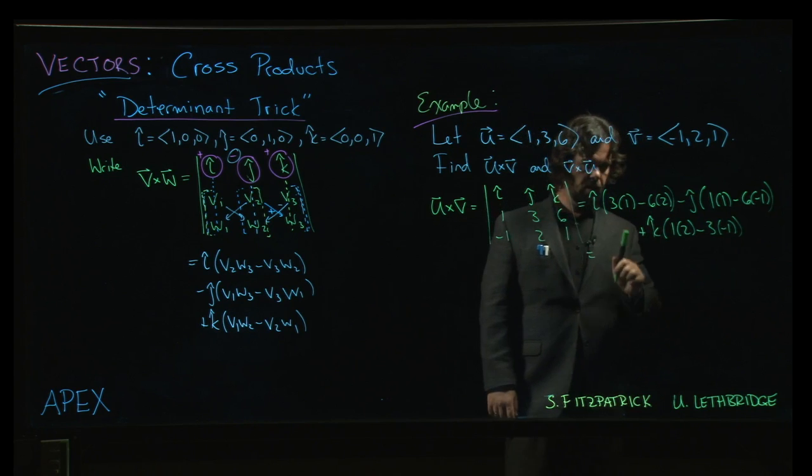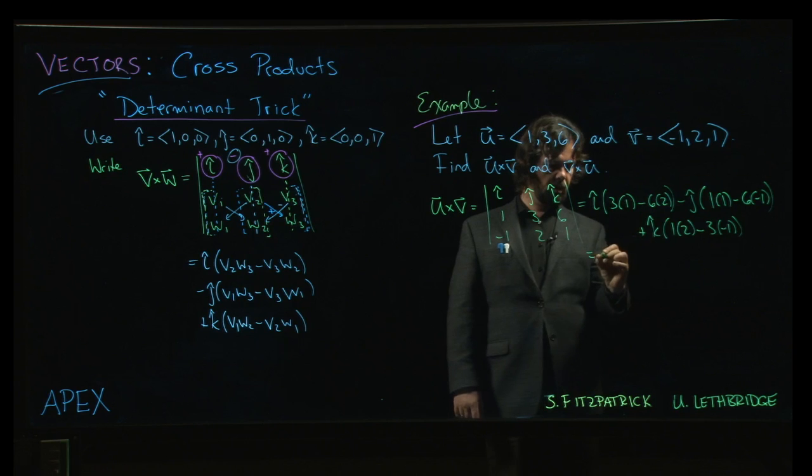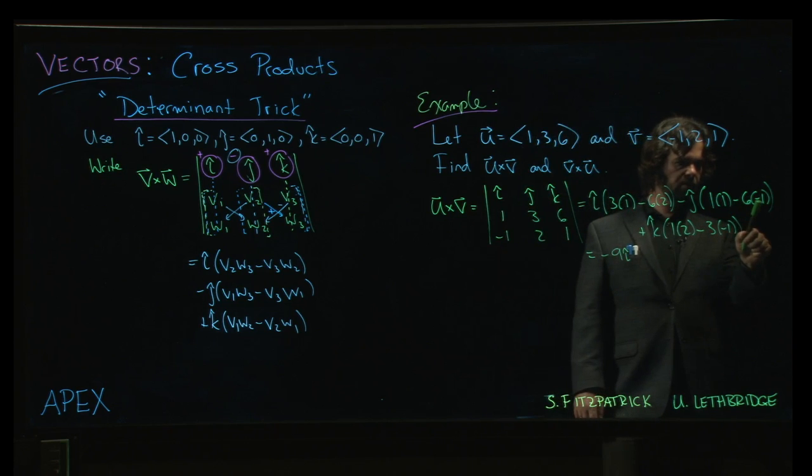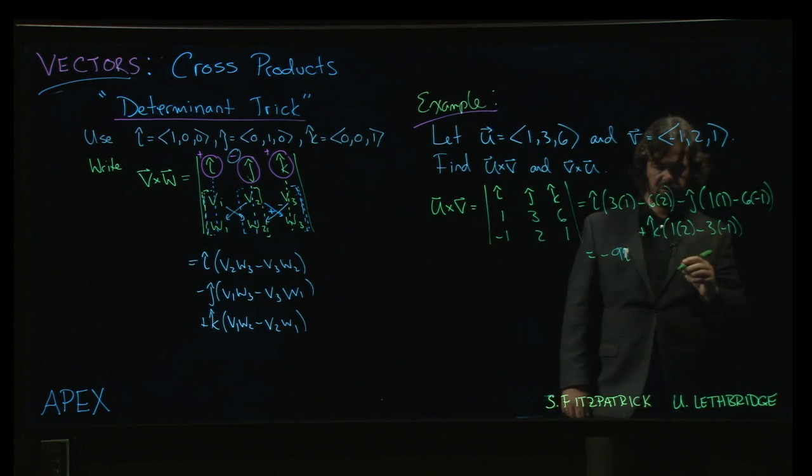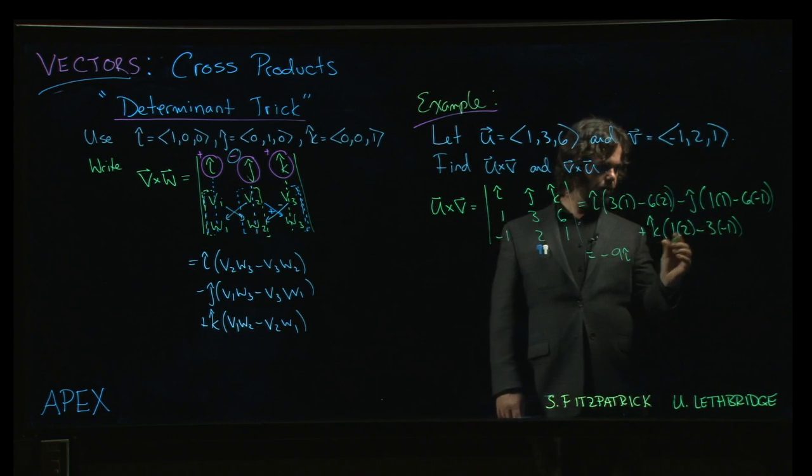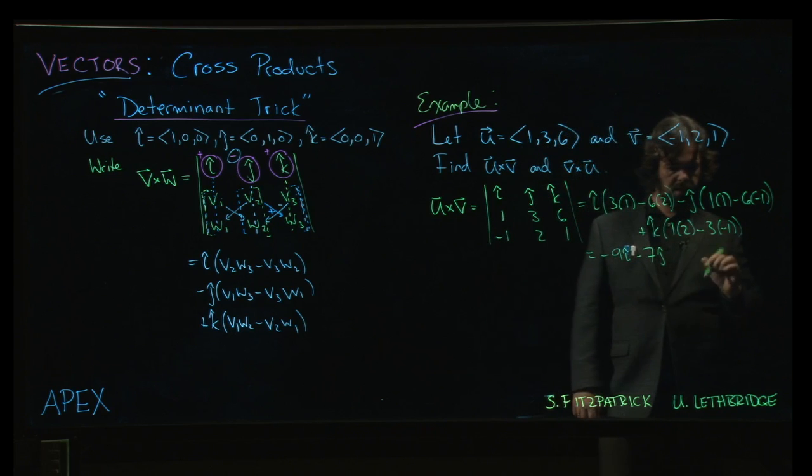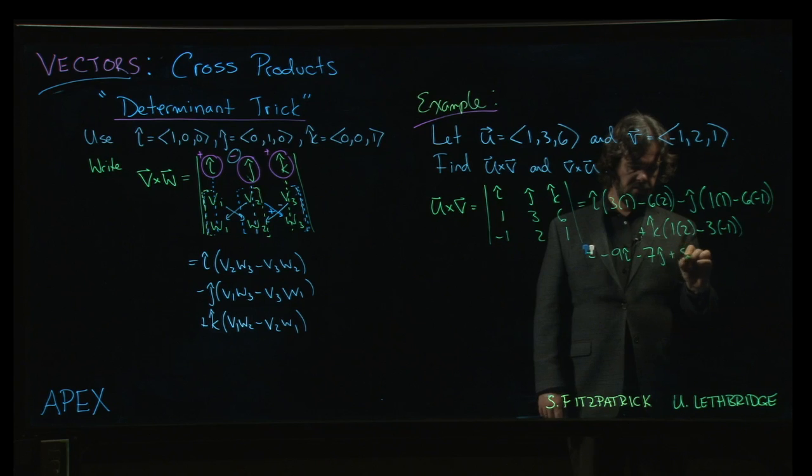And so we get, let's see. 3 minus 12, so minus 9. Minus 9i. Minus minus 6 becomes plus 6. 6 plus 1 is 7. But don't lose the minus sign out front as well. Becomes minus 7j. And then we have minus minus again. So 3 plus 2 is 5. Plus 5k.